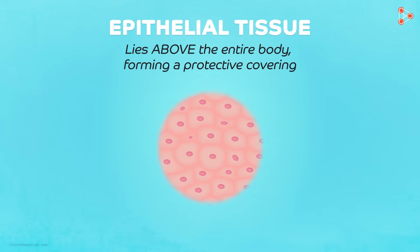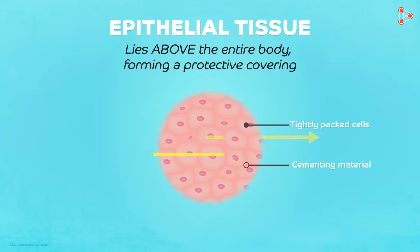The structure of epithelial tissue is quite evident from its function. Since it has to perform as a protective layer, it cannot afford to have spaces between the cells. Hence, we find the epithelial tissue to have tightly packed cells forming continuous sheets. The tissues lack intercellular spaces and have an extremely small amount of cementing material. So every single substance that passes in or out of the cells needs to cross the epithelial layer at least once. Accordingly, the permeability of cells will differ in various epithelia depending upon the exchange of materials.